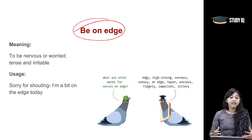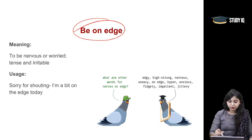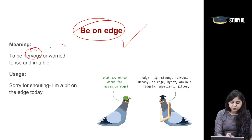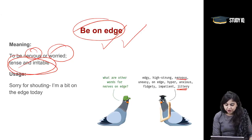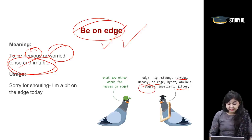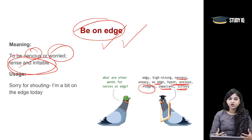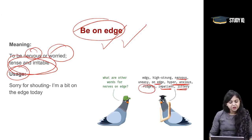Moving on to the next phrase: Be on the edge. When you are very nervous, anxious, tense, and irritable, we use this phrase. Being on the edge means you are very nervous, worried, or tense. Synonyms include jittery, fidgety — expressing nervousness through body language — impatient, hyper, or anxious. Usage: Sorry for shouting, I am a bit on the edge today — meaning slightly nervous and anxious.